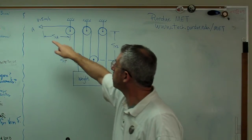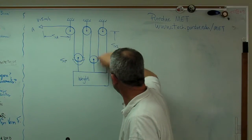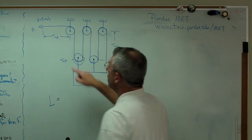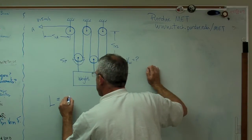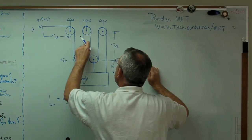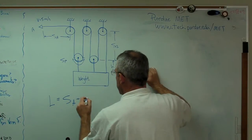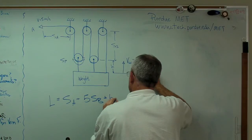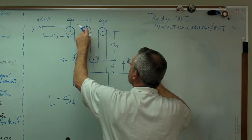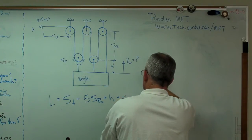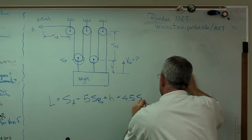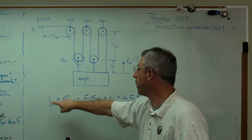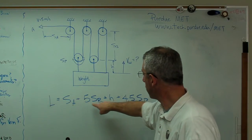All I've got to do now is write out the length of the rope as a function of all this. I'll add all this up. So the length equals SA plus five times SP plus H plus four-and-a-half times SP. So far so good — we've got the length of the rope expressed as the sum of all these things.